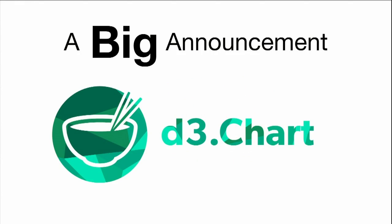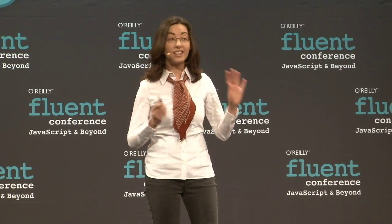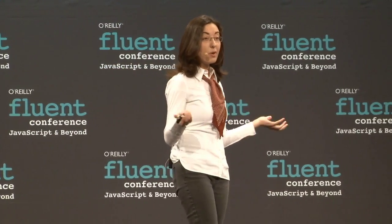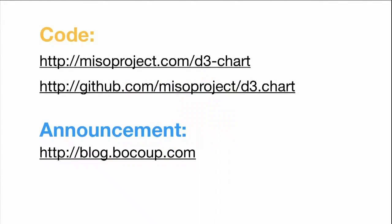I'm really excited today to announce a new project from the Miso project, which we've been working on for over about six months, called D3 Chart. D3 Chart is a framework for creating reusable charts with D3. What it is not is a library of charts — there are no charts with D3 Chart, except those that you will contribute and that we've contributed so far, to hopefully create a larger community of chart creators. There are two blog posts on the Boku blog: one talking about the reusability concept in great detail that Mike had written, and a second one actually announcing the specific library and giving you some details about how it works.